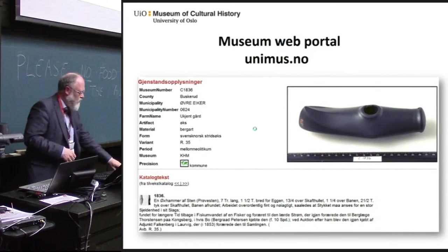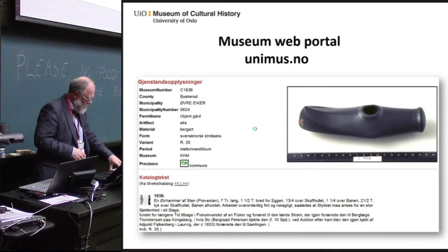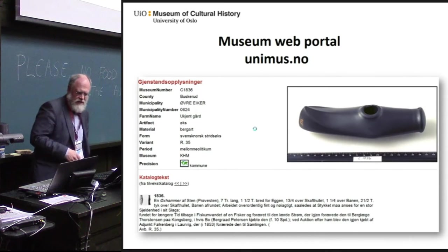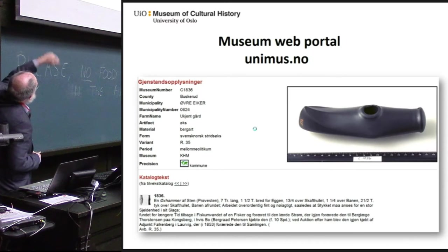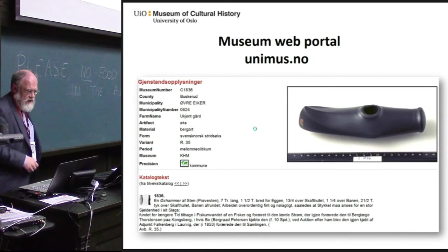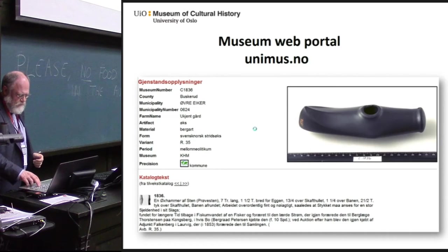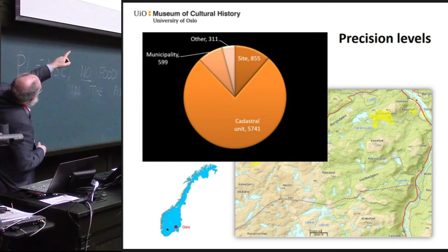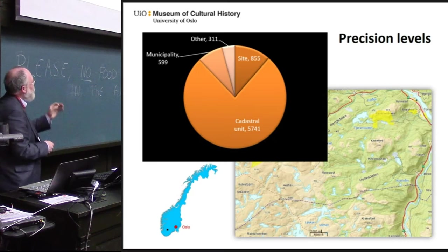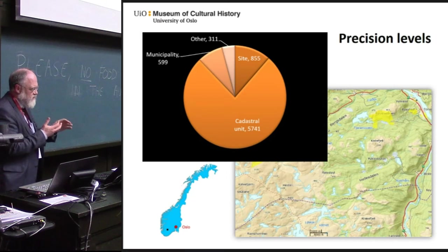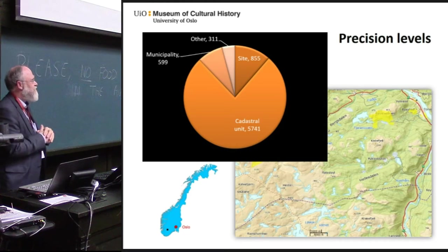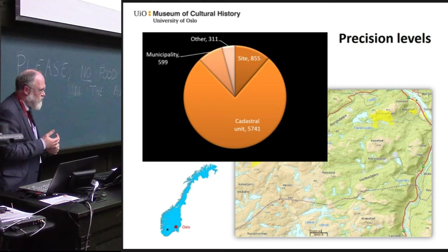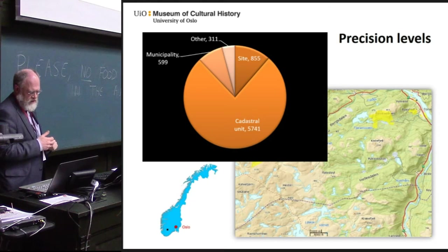This is an example of how one post in the database — one object — is presented with some basic information, and also with the original catalog text at the bottom. We have here an example of how the sites are presented in the database. We have different precision levels, and most of the sites have a precision level of the cadastral unit, meaning we know which farm it was found on, but not more precisely than that.